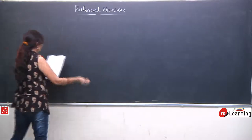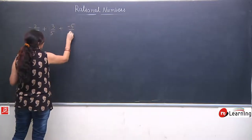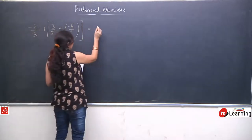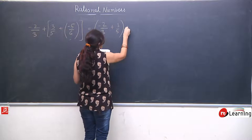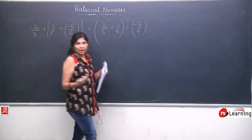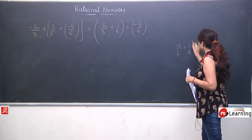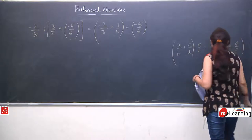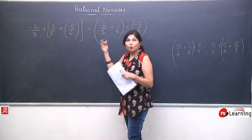Ab hum rational numbers ke teen terms lete hain — three fractions: minus 2 upon 3 plus 3 upon 5 plus minus 5 upon 6, with bracket position on the last two terms. Ab commutativity ke baad aage badhte hain — associative property jo humne already padhi hai. Associative property says: if we have three rational numbers and we change the bracket position, they will give the same answer — LHS equals RHS.